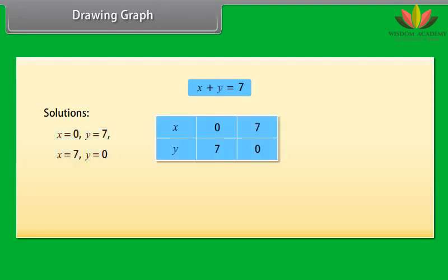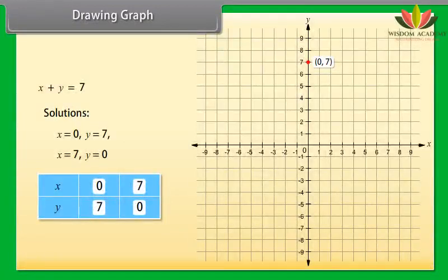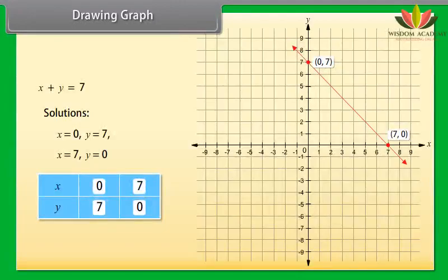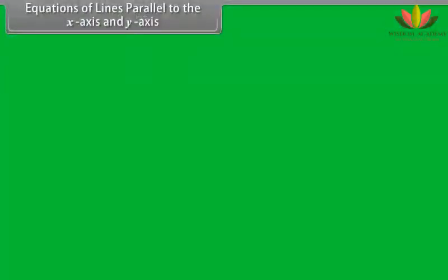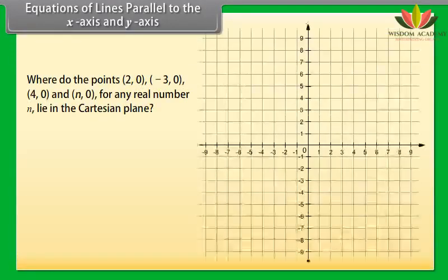Let us now draw the graph of X plus Y equals 7. To draw the graph, we need at least two solutions. The two solutions are: X equals 0, Y equals 7; and X equals 7, Y equals 0. We use a table with these values. The point for X equals 0, Y equals 7 is plotted, and the point for X equals 7, Y equals 0 is also plotted. Join these two points — this is the required graph for the given equation.